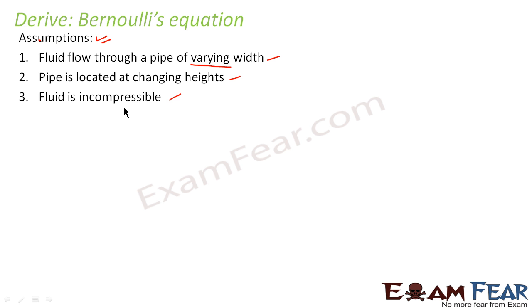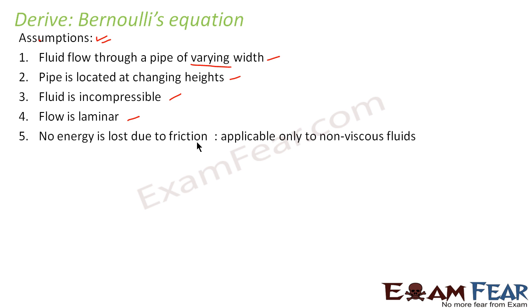We have used the term incompressible quite a number of times. Incompressible means even if we apply pressure, the volume is not reduced. Next, the flow is laminar — we consider that the flow of the fluid through the pipe is a steady or laminar flow. Also, no energy is lost due to friction; we ignore friction, which is applicable only to non-viscous fluids. Fluid friction is called viscosity, and while deriving Bernoulli's equation we completely ignore fluid friction — we consider the fluid to be non-viscous.